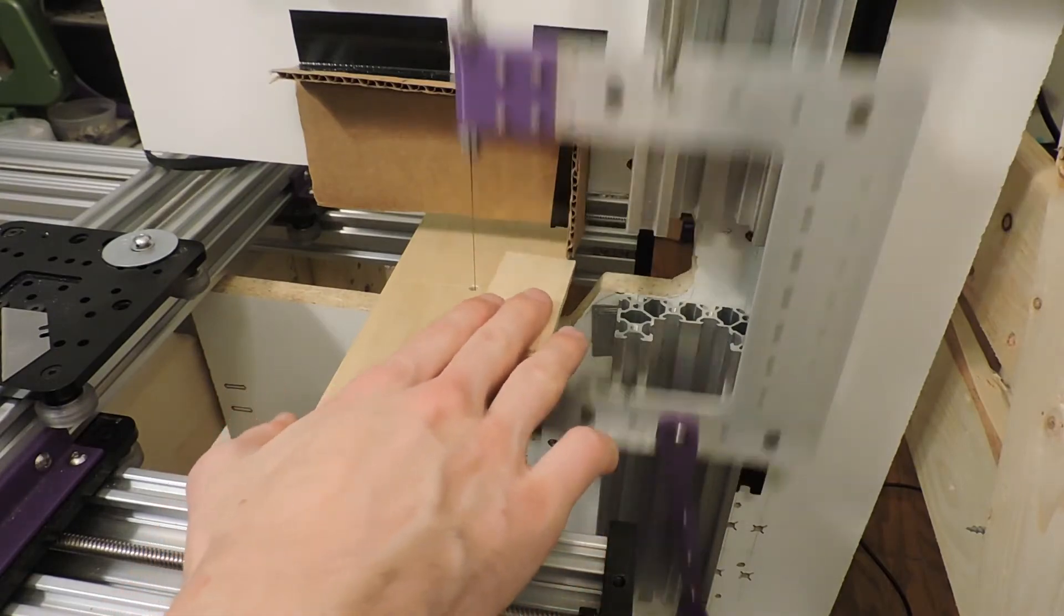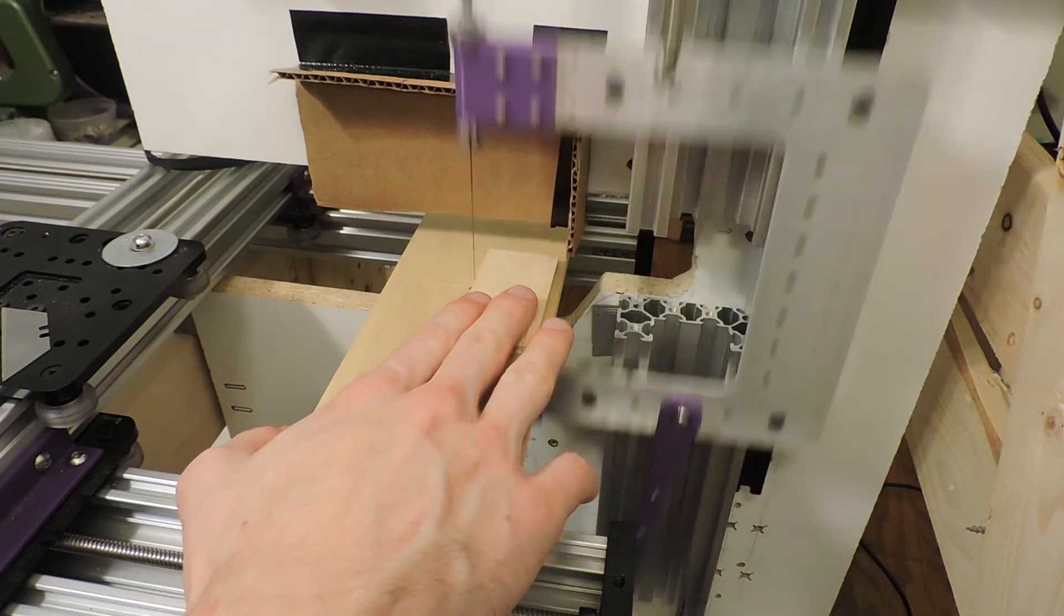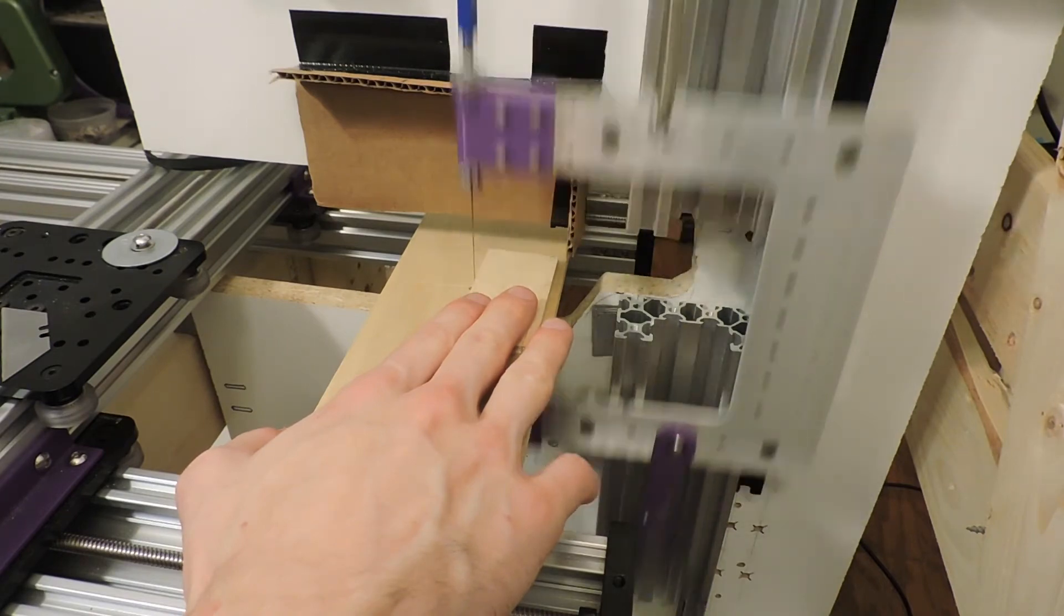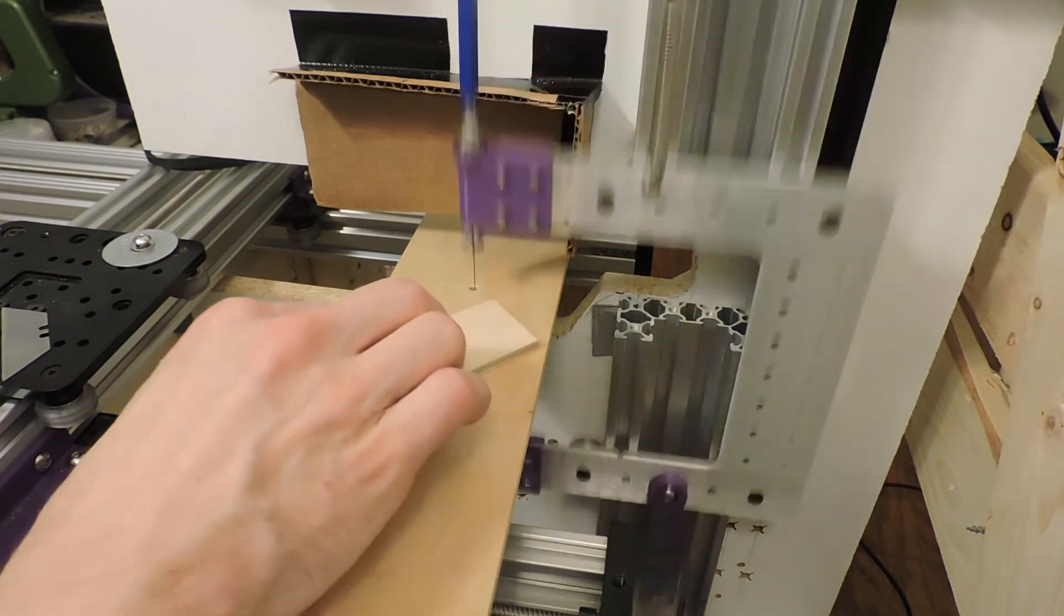Another area where I lose some precision is in the blade holder. They currently have a 1.5 millimeter hole that the blade slots into, but if I don't get the blade concentric in the middle of that holder then as it rotates the movement is going to be off.